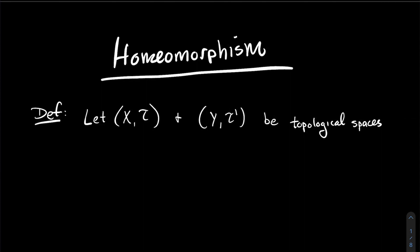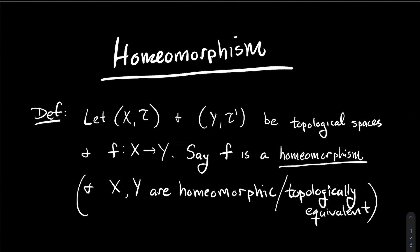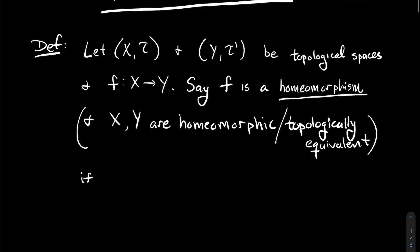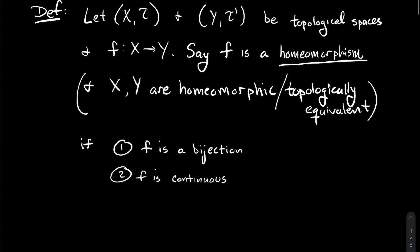Let's say you've got two topological spaces — two sets X and Y, each with their own topology T and T prime. Let's say I've got a function that goes from X to Y. We're going to say F is a homeomorphism, and we'd also say X and Y are homeomorphic, or in older terminology, topologically equivalent. For F to be a homeomorphism, three things must hold: F is a bijection (one-to-one and onto), F is continuous, and F inverse is also continuous.